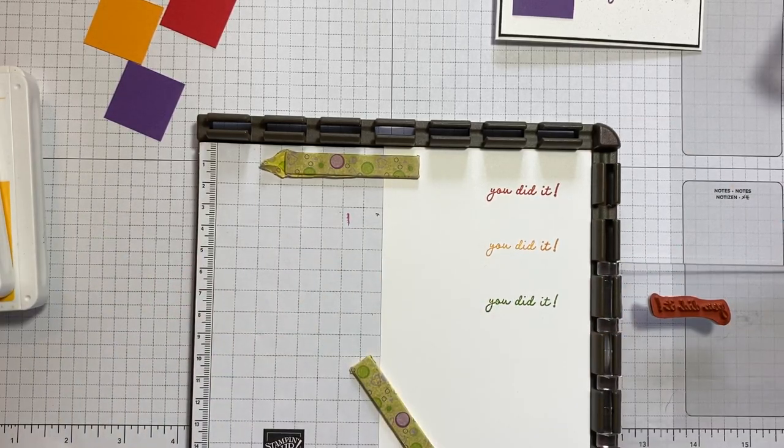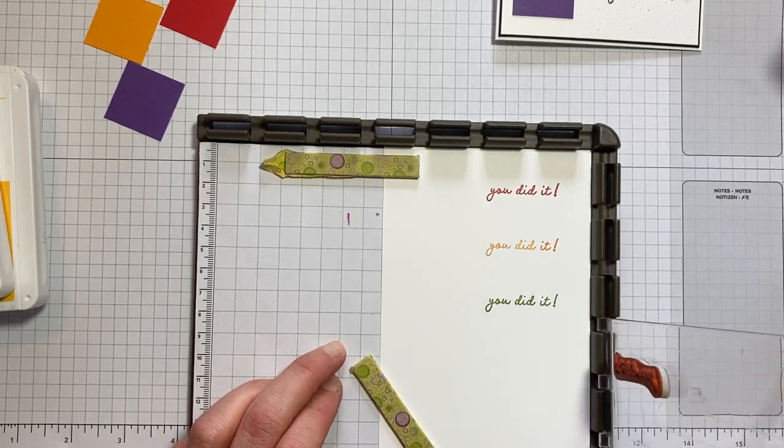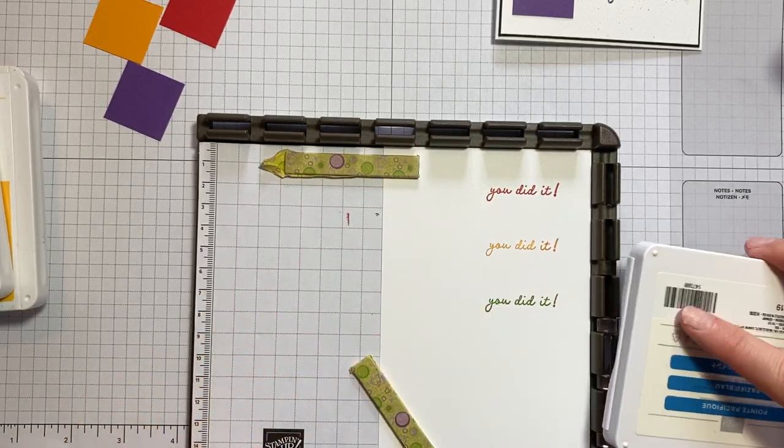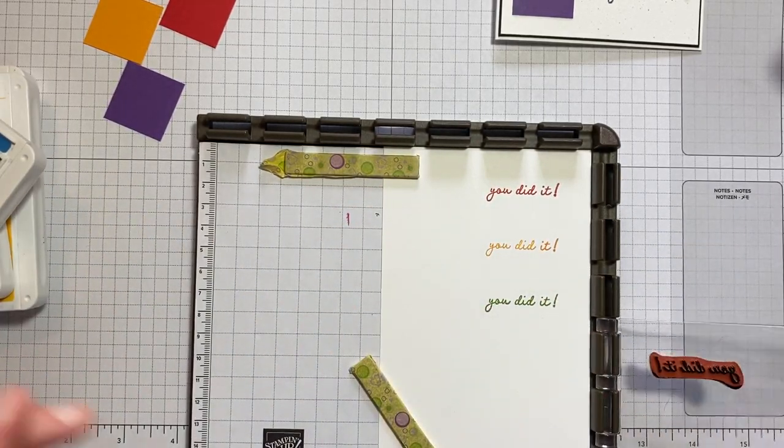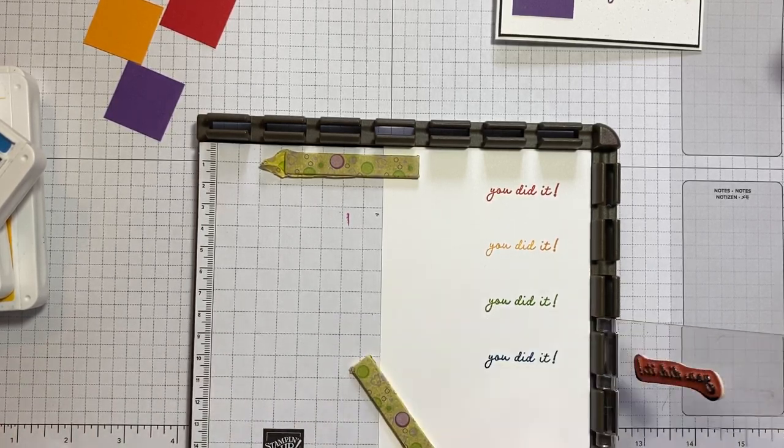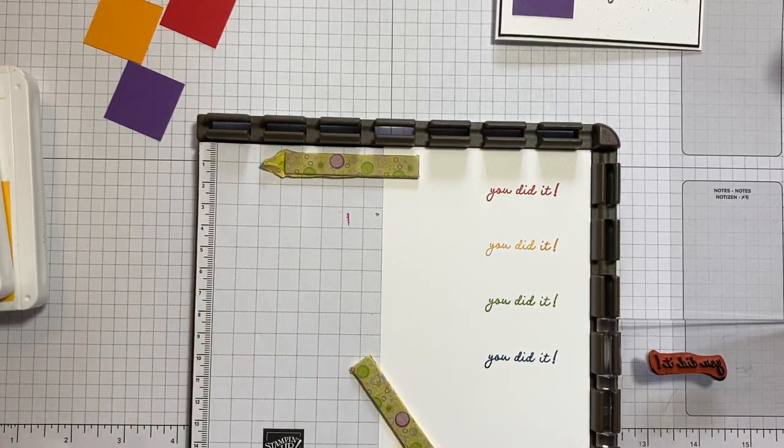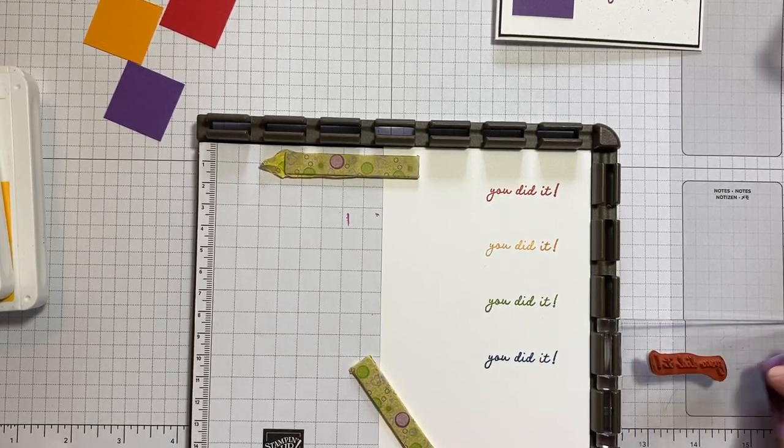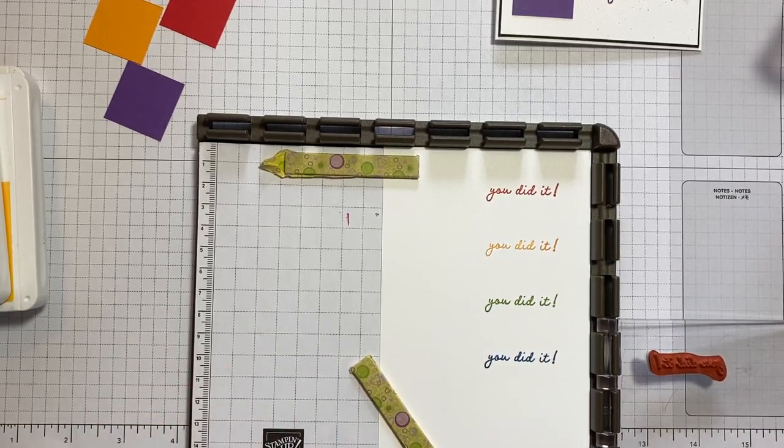Click wipe. Moving down to the next step for the Granny Apple Green. Click wipe. On to the Pacific Point. And finally, we're going to use Gorgeous Grape.